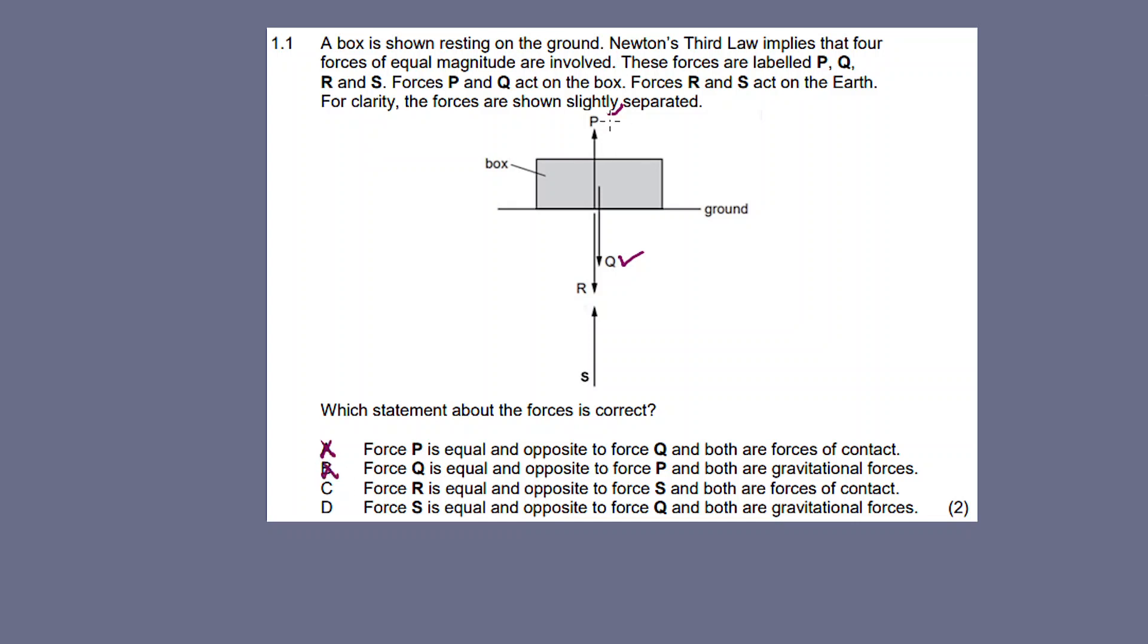Option B: Force Q is equal and opposite to P and both are gravitational forces. Again, B is incorrect. P is a contact force and Q is a gravitational force, so they are both not gravitational forces. One is a contact force, the other is a gravitational force.